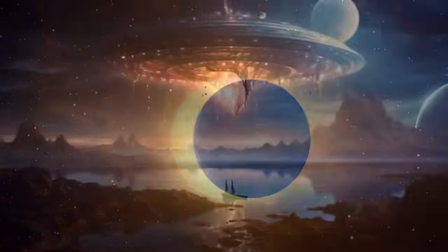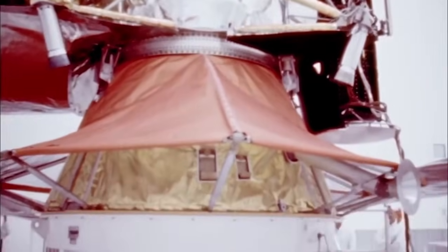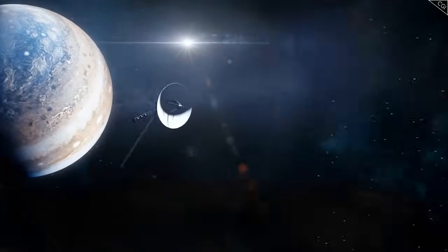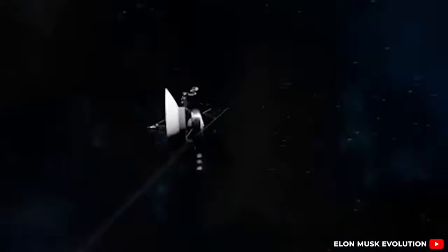By that time, Voyager 1 and 2 will be unrecognizable as they continue to drift, their instruments long silent due to their power sources running out. However, they will still travel through the galaxy on a path that will eventually take them 50,000 light-years away from the sun, across the Milky Way.